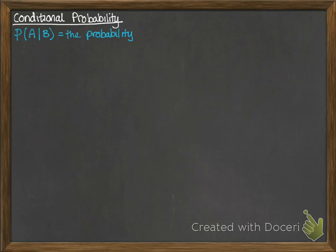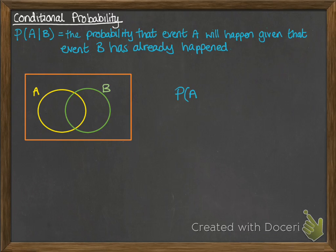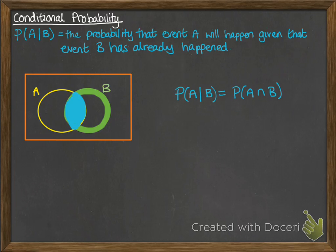What this means is the probability that event A will happen given that event B has already happened. If we're looking at the probability that A will happen given that B has happened, we're restricting our sample space down to just B. So we know that B has already happened, and we now want to find the probability that A is going to happen.